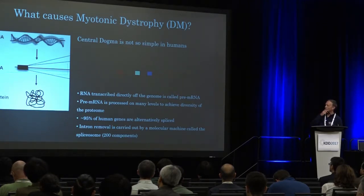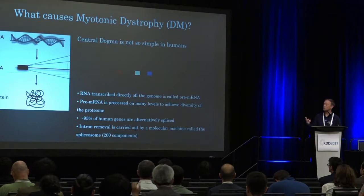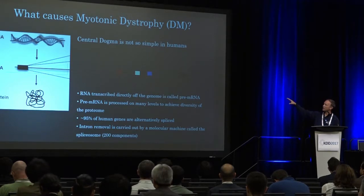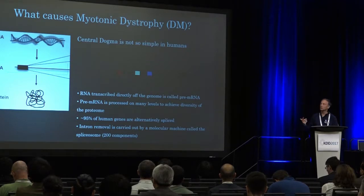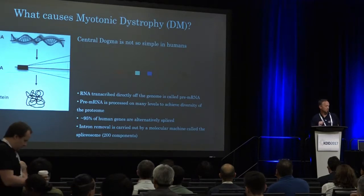Something I've studied for the last 20 years is a machine called the spliceosome. It's a small molecular machine made up of more than 200 components that reads the RNA and splices out the intron sequences, pasting together the exons. The spliceosome is critical for doing things properly in the cell. We'll talk about one small component of it in this disease.